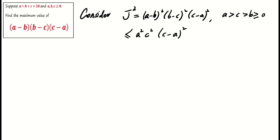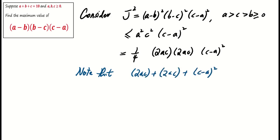Again, apply AM-GM inequality. We modify the expression to 1 over 4 times 2ac times 2ac times (c minus a) squared. By AM-GM, the average of 2ac, 2ac, and (c minus a) squared is at least the cube root of their product.